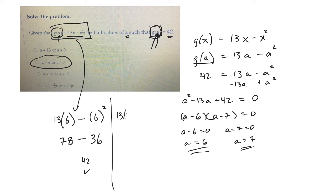And if you plug in a 7, 13 times 7 is 91, I think. 7 squared is 49. If you subtract those two, I'm hoping the answer is also 42. All right. Hopefully that helps you with that one. We'll see you next time.